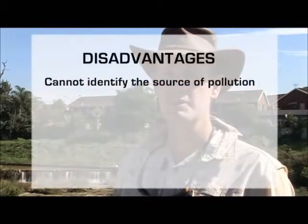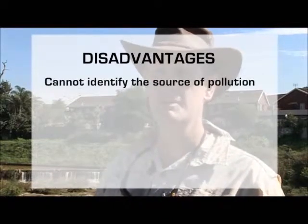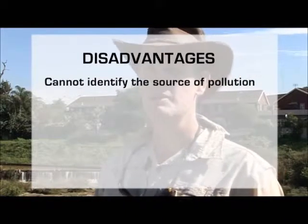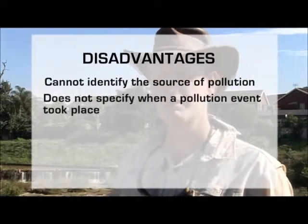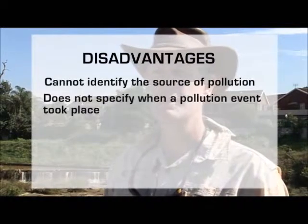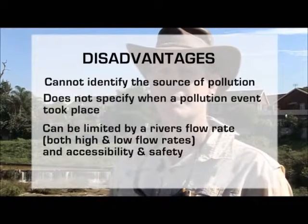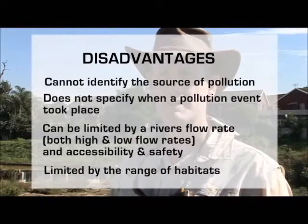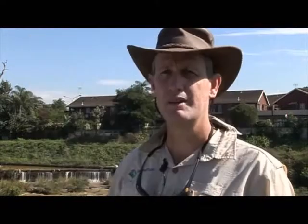However, it's not a complete panacea for all monitoring. There are some disadvantages. It does suffer the problem of not being able to clearly identify what the source of pollution is directly — whether it's a faecal sewage type pollution, heavy metals, or chemicals. It also doesn't necessarily tell you exactly when the pollution event took place, although it gives you some indication. Additionally, it is limited in cases where the flows are such that you can't get into a river to sample it, and to some degree it's also habitat dependent — you need a reasonable range of habitats for the site to express itself and give the full opportunity to indicate what's at the site.